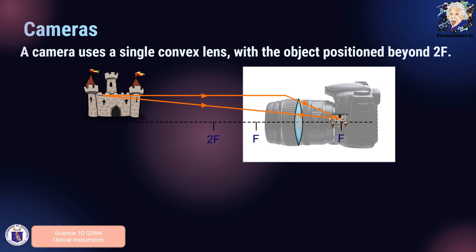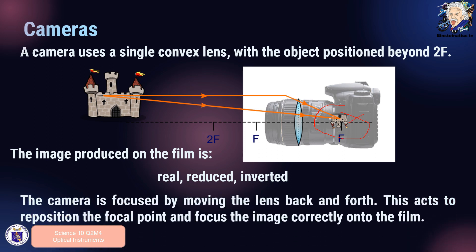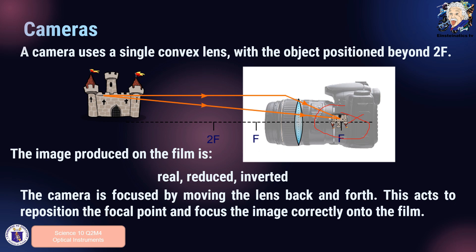A camera uses a single convex lens with the object positioned beyond 2F. The image produced on the film is real, reduced, and inverted. The camera is focused by moving the lens back and forth, which repositions the focal points and focuses the image correctly onto the film.